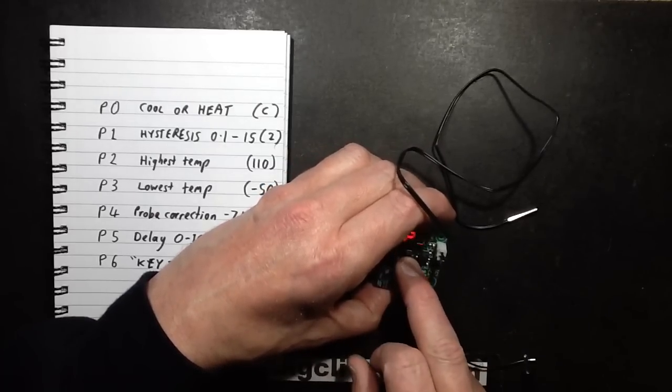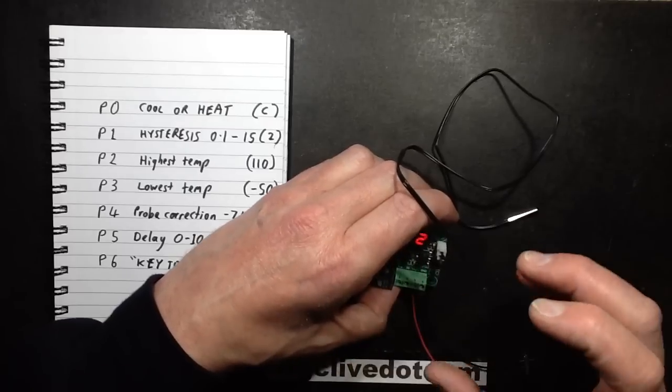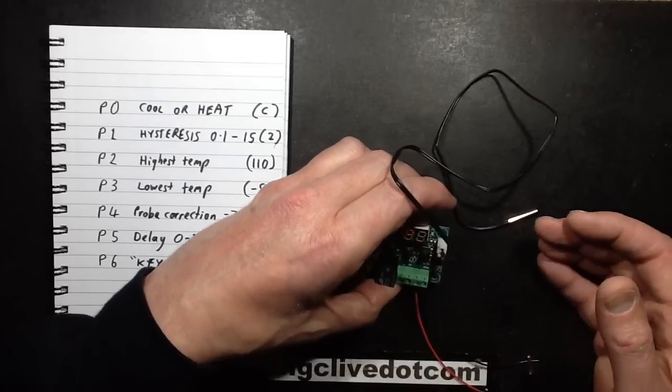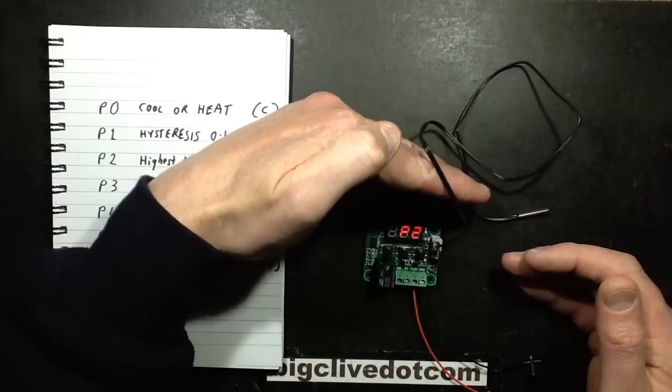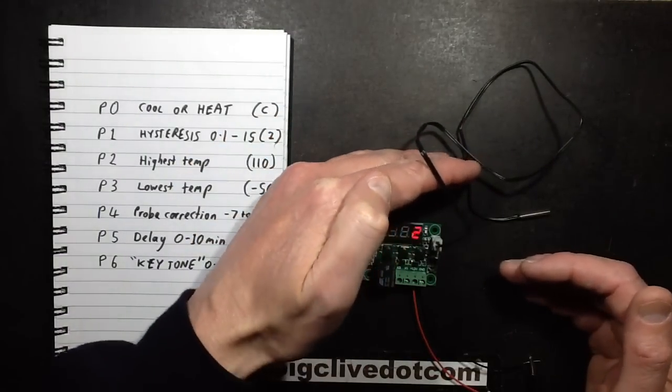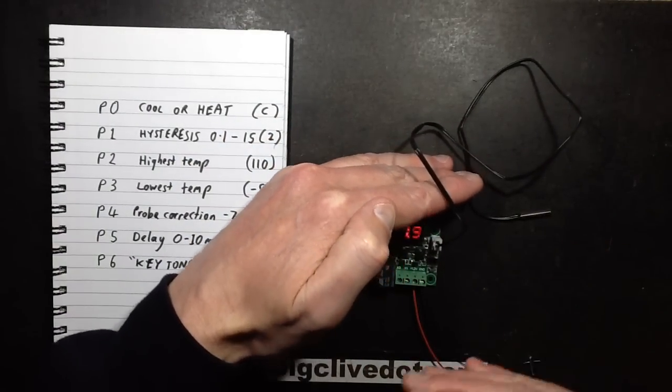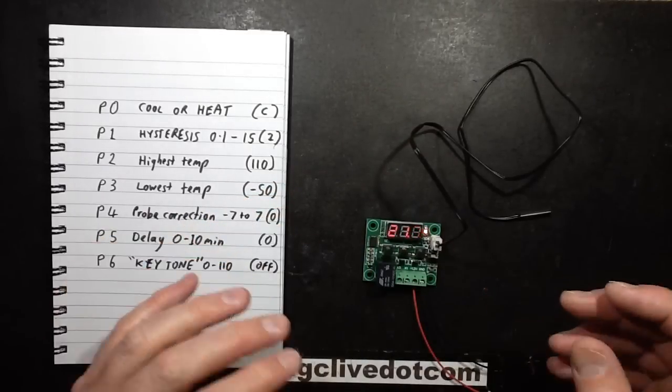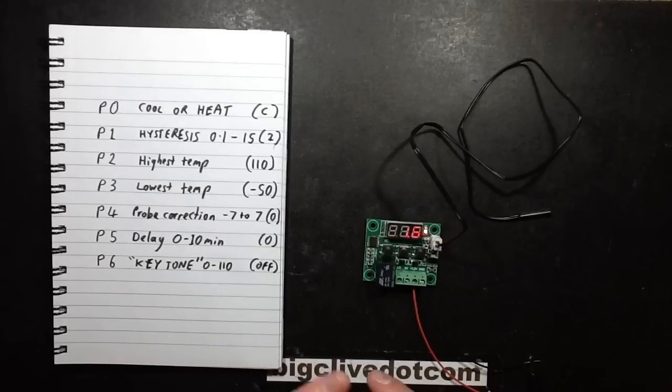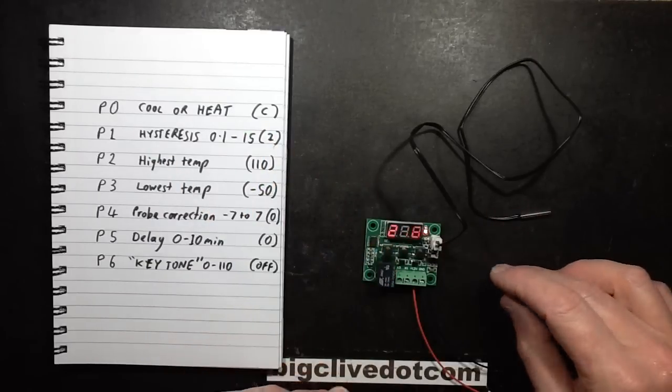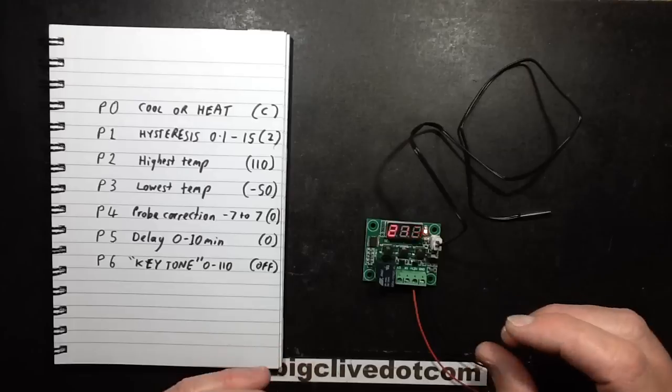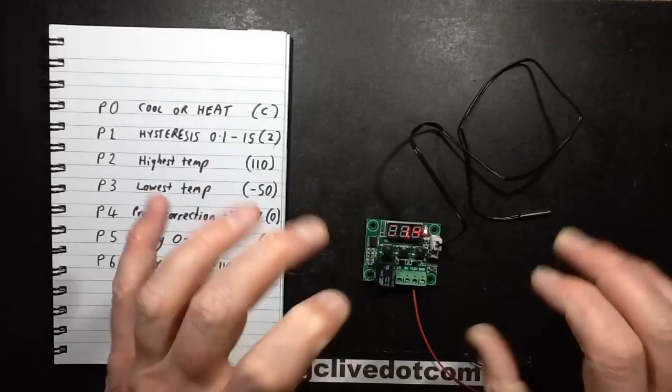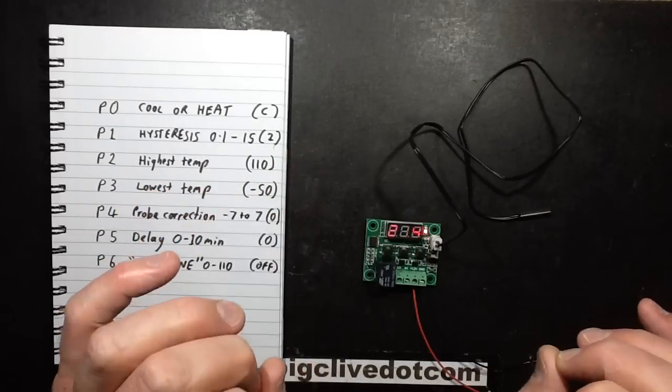The next thing you can change, P2, is the highest temperature it will read. Now that doesn't seem to make much sense because it can read up to about 110 degrees centigrade, it can read down to minus 50. But if you set a higher temperature, when it reaches that, say you didn't want it to go anywhere near 100 degrees centigrade, if you set 100 degrees centigrade, then when it reaches that temperature it will actually start flashing the display. It will warn that it's too hot.